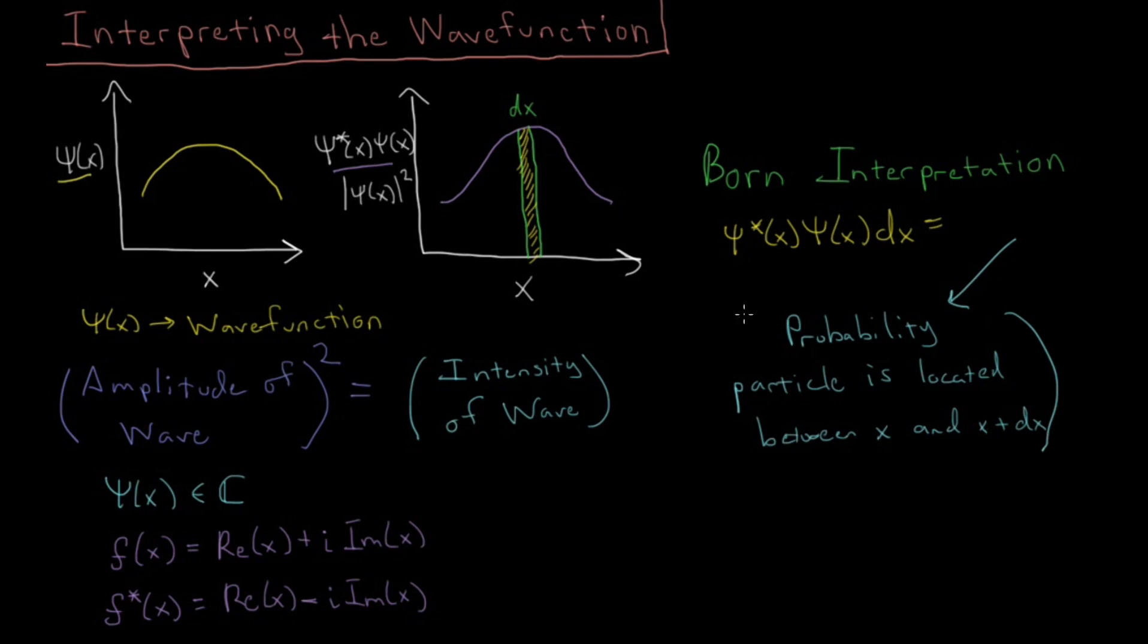So when we originally said that quantum mechanics is probabilistic, that you don't get exact trajectories out of it, this is what we mean. This interpretation of the wave function tells us that we don't know exactly where the particle is, but the wave function, or the absolute square magnitude of the wave function, tells us the probability of where the particle is likely to be located in space. So in regions where psi star psi is large, the particle is more likely to be there than regions where psi star psi is low.